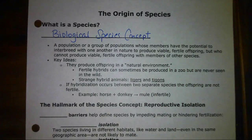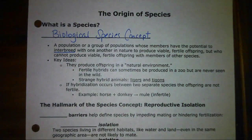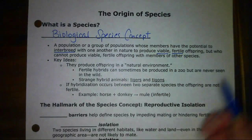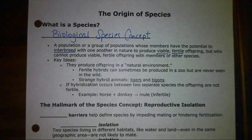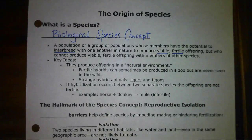I'm going to point out a couple of key words in this definition. It says a population or groups of populations whose members have the potential to interbreed — so they can mate with one another — and produce viable and fertile offspring. Make sure you know what viable and fertile mean. Viable means they can survive, they can live past birth and they're healthy. Fertile means that they themselves can also produce offspring. That is the definition of species we are going to stick with.